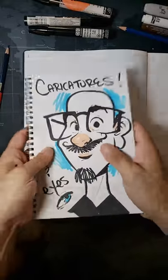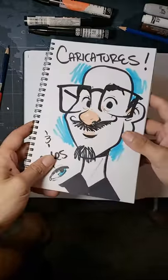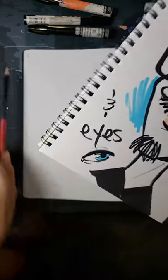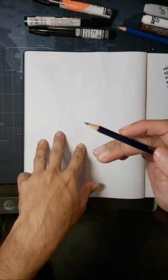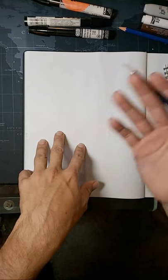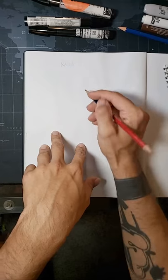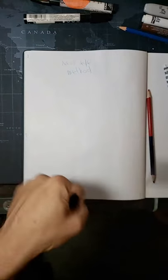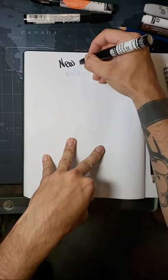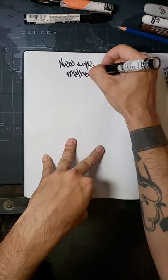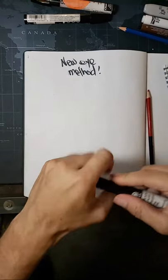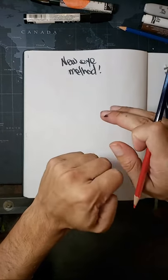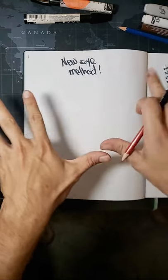Let's start with a little sub-lesson — something that just clicked for me this last week that I wanted to share with everybody. This is a new eye method. I'm going to show you how to map out the eyes on your characters. It's incredibly simple, without all the complications that come with everything we normally draw.